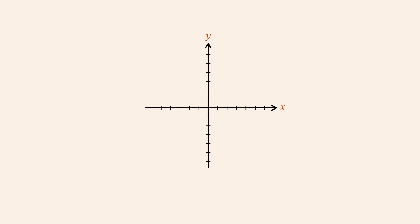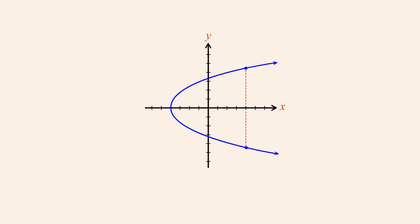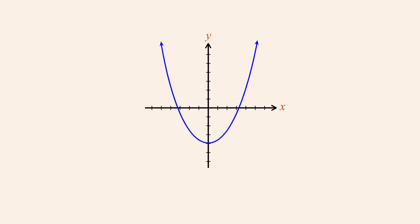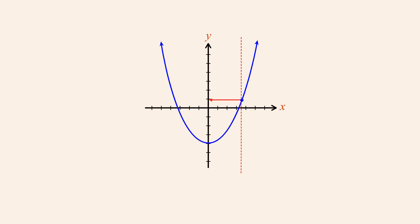Likewise, this graph does not represent a function since there are values of x which map to more than one value of y. However, if we rotate this graph by 90 degrees then it can represent a function, since any value we pick on the x-axis will map to only one value of y.